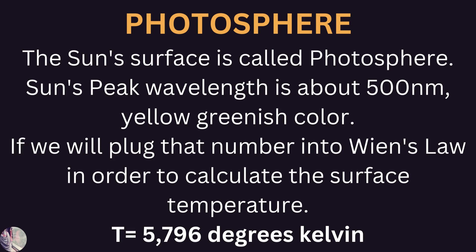Photosphere — the sun's surface is called the photosphere. The sun's peak wavelength is about 500 nanometers, that is a yellow-greenish color. If we plug that number into Wien's law, which I have discussed in my previous videos, in order to calculate the surface temperature, then that will be equal to 5796 degrees Kelvin.